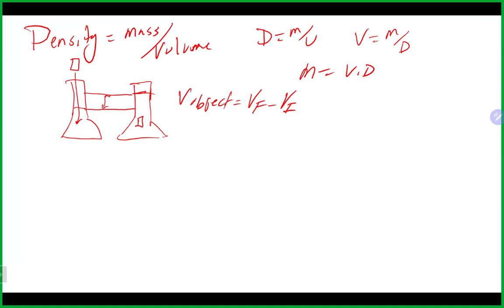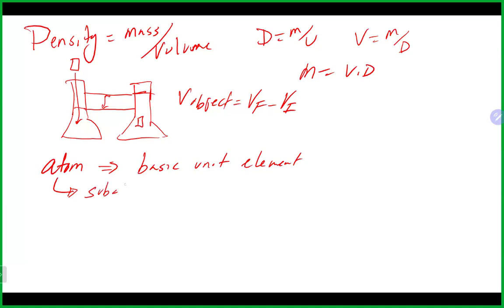We then move on to chapter four and our talk about the atom, which is the basic unit of an element that can enter into chemical combination. The atom is made up of smaller particles called subatomic particles — those are our protons, electrons, and neutrons.